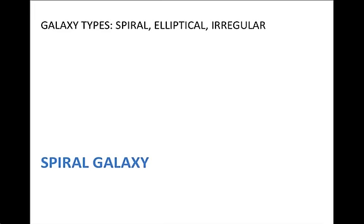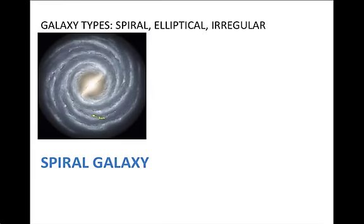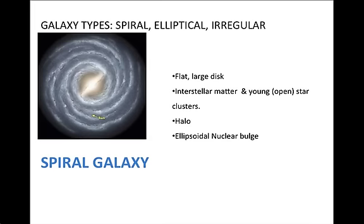First, a spiral galaxy has a flat and large disk, interstellar matter and young open star clusters, a halo, ellipsoidal nuclear bulge, spiral arms, and our Milky Way is an example of what a spiral galaxy is.